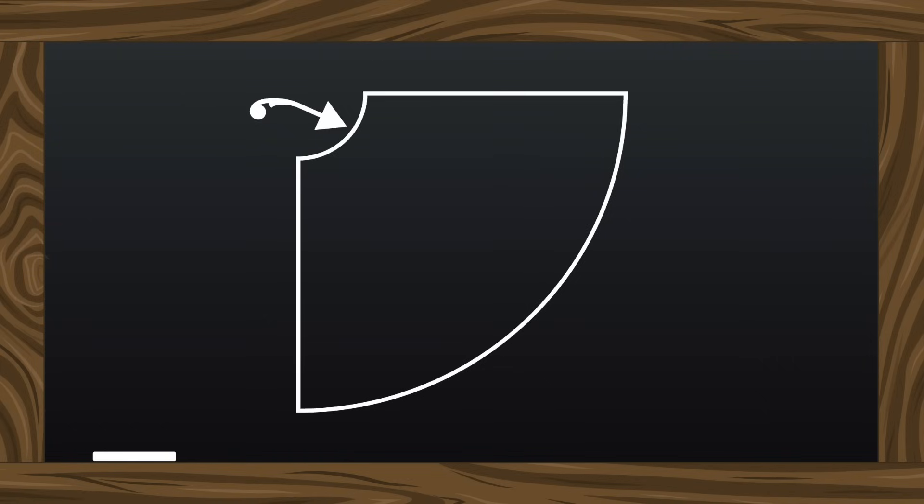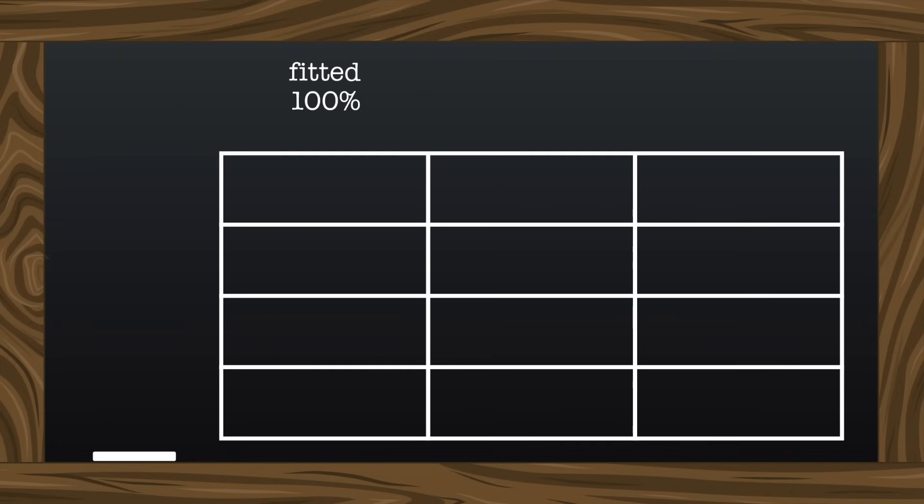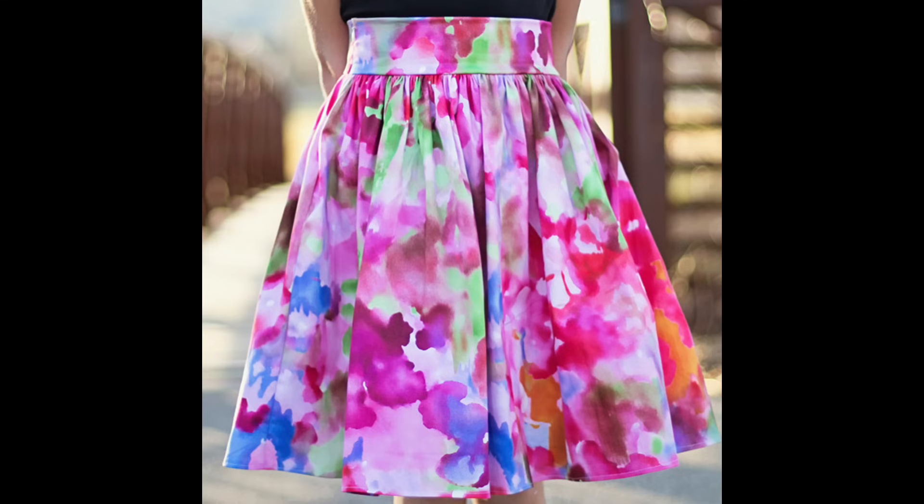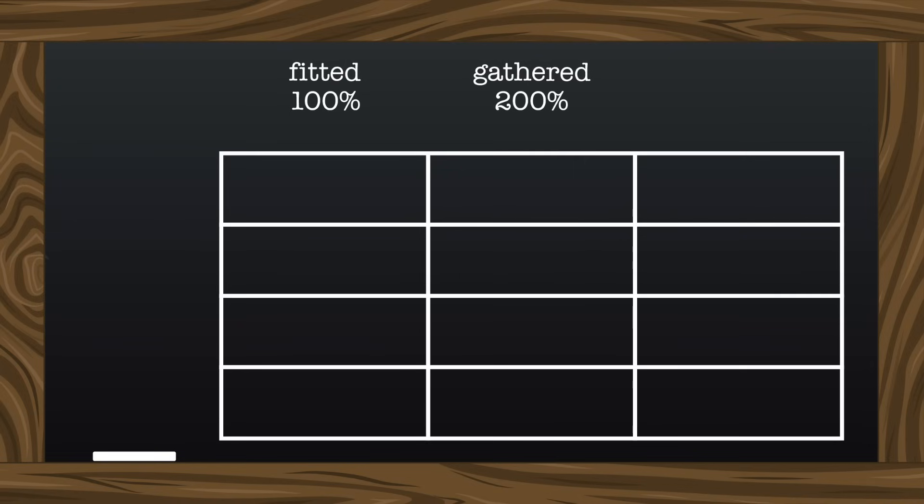To simplify things, I'll make the curve on a fitted skirt match my waist measurement exactly, or 100%. For gathered skirts, you don't want them too terribly full or they'll get bulky. I think I'll make the gathered waist curve twice as large, or 200% of the finished waist measurement.